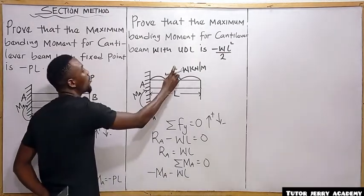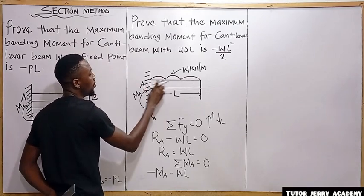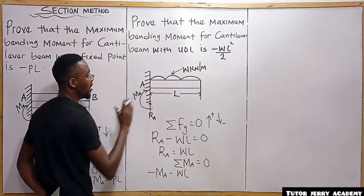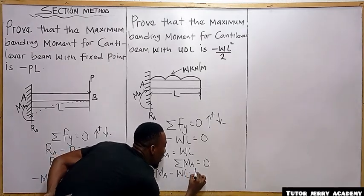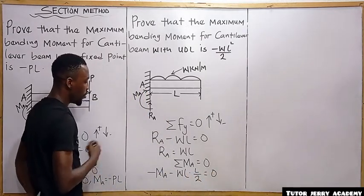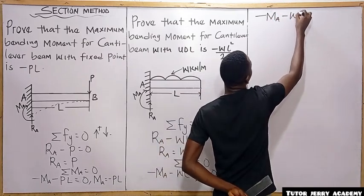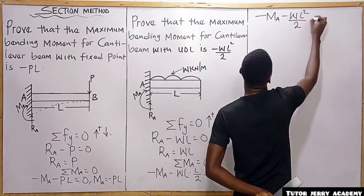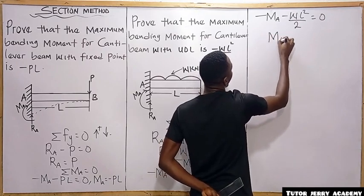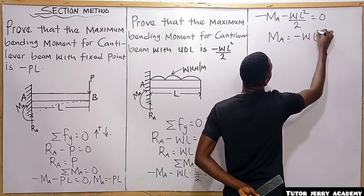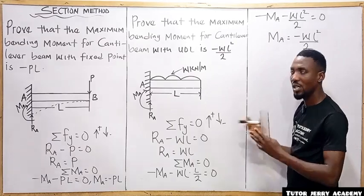When you convert the UDL to a point load, it acts at the center of the beam. So the distance from center to point A is L over 2. The moment is W times L multiplied by L over 2. This gives: minus M_A minus WL squared over 2 equals zero. Making M_A the subject: M_A equals minus WL squared over 2. This proves the required result.